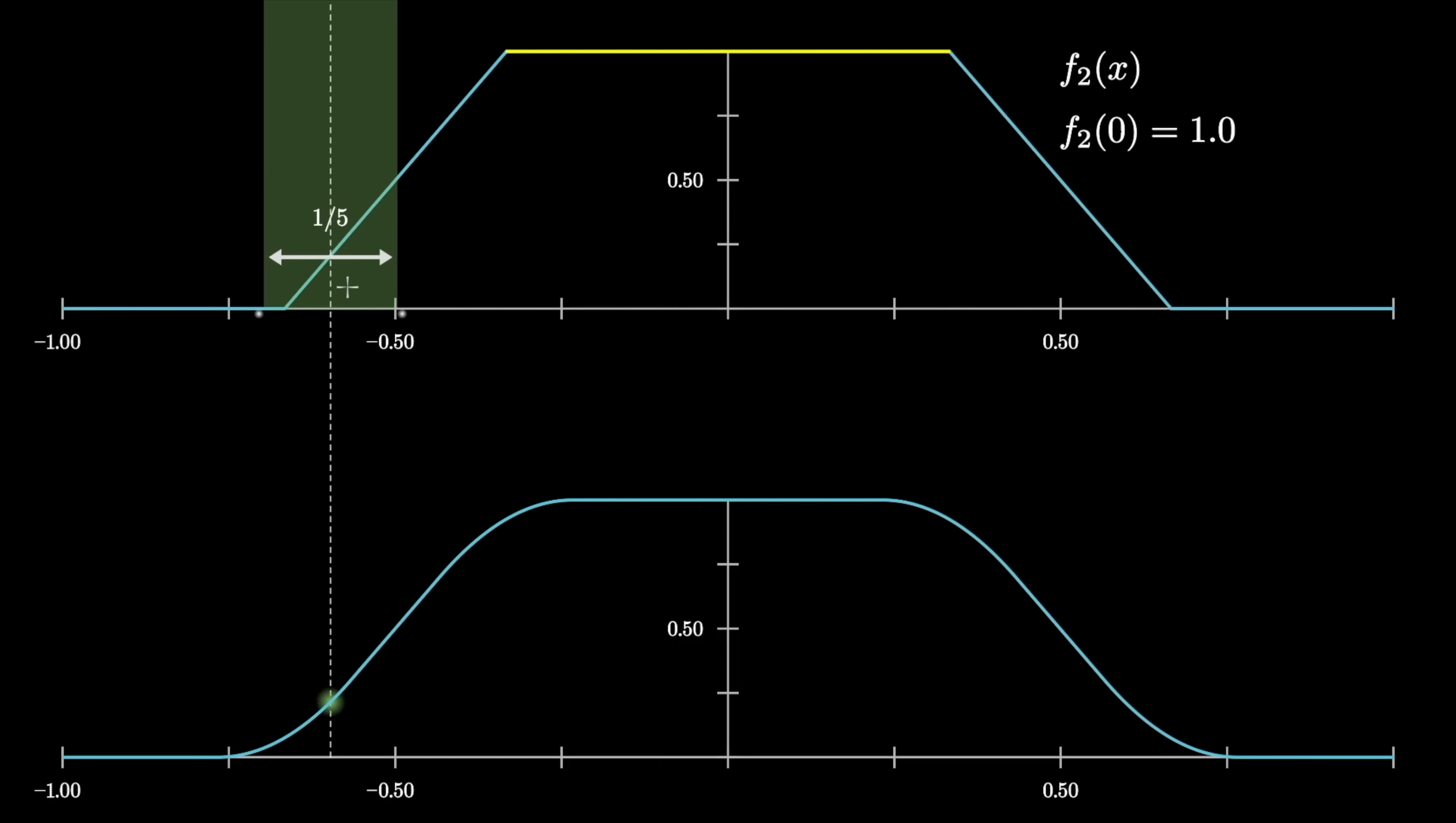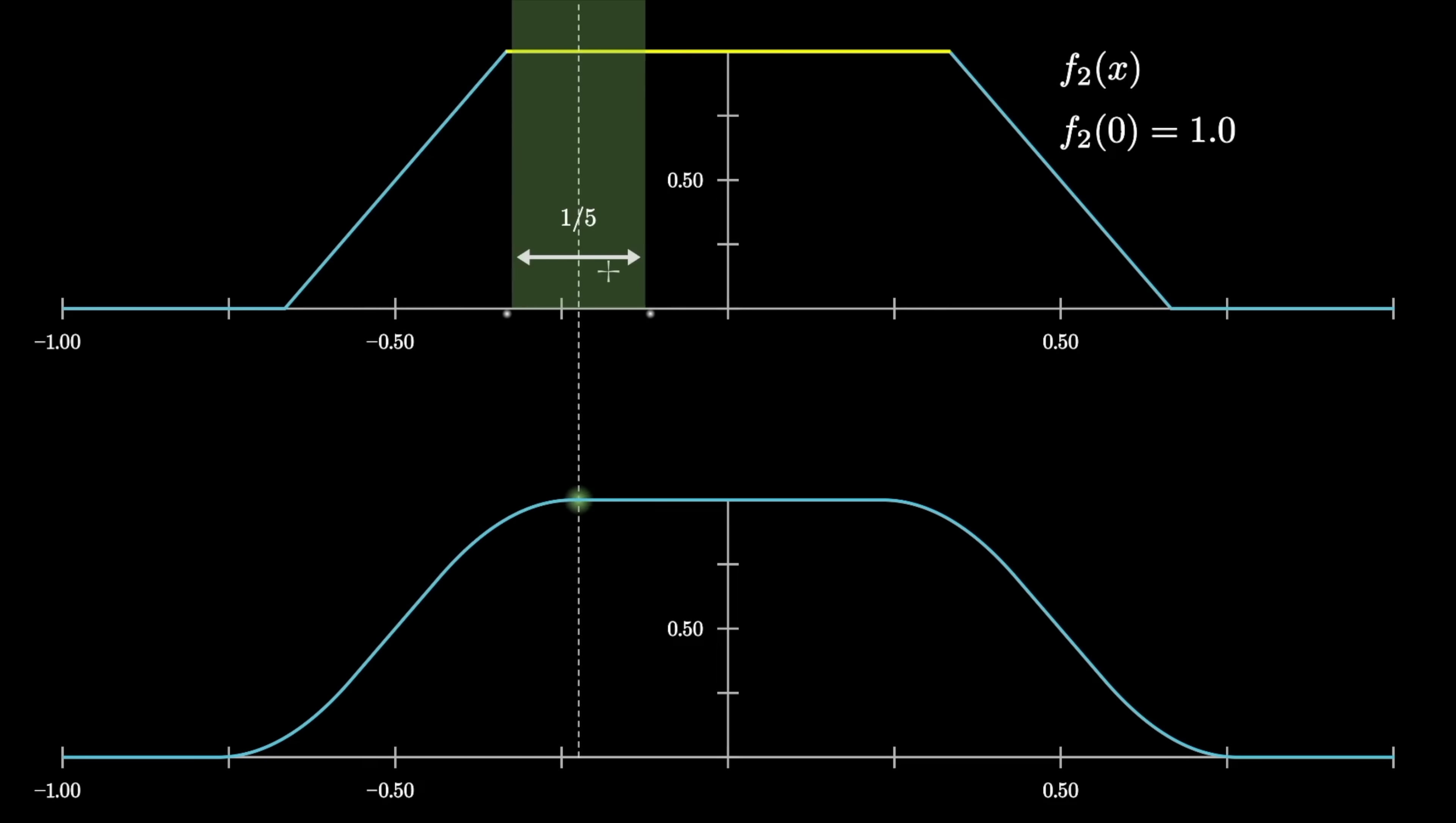And again, the significant thing I want you to focus on is how when that window is entirely inside the plateau of the previous function, then by definition, the bottom function is going to equal 1. This time, the length of that plateau on the bottom will be the length of the previous one, 1 minus a third, minus the window width, 1 fifth.